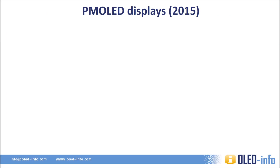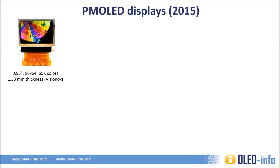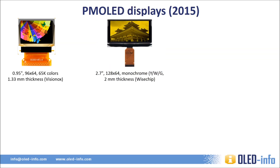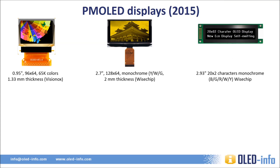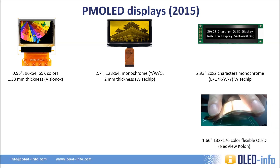Let's take a look at some sample passive matrix OLED displays now on the market. Here's a small 1 inch display made by Visionox, which is 96 by 64 pixels. This is a larger 2.7 inch display, but it's monochrome, made by WyzeChip. And here's a long, almost 3 inch character display by WyzeChip, which is also monochrome. Here you can see a curved, flexible passive matrix OLED made by NeoViewColon, 1.66 inches in diameter.